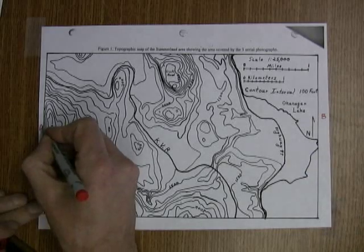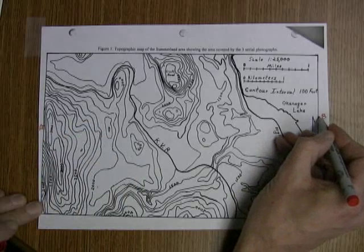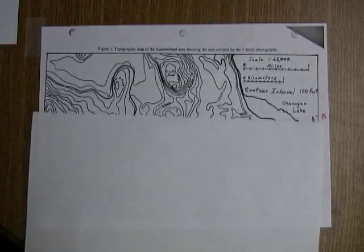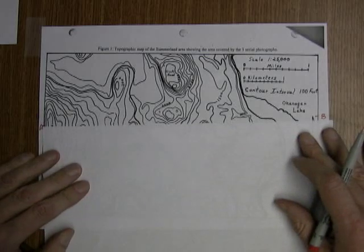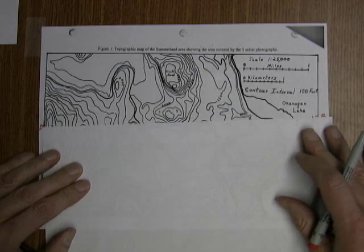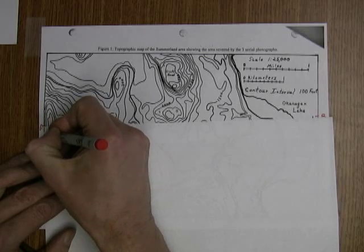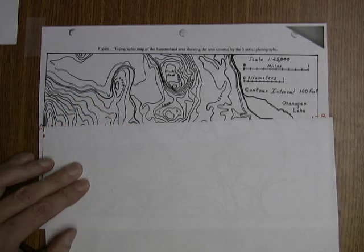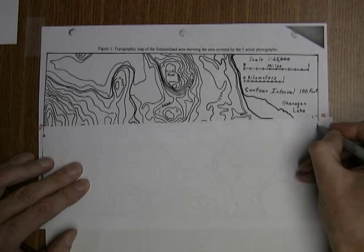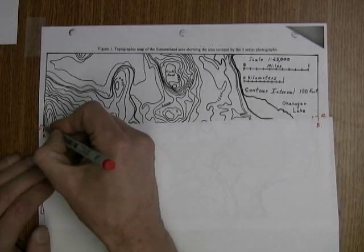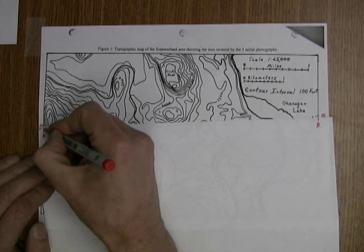Now in order to draw that profile what we need to do is to take a piece of scrap paper. We put the scrap paper from here to there. We mark on here A and B and every time one of these contour lines crosses this piece of paper we'll put a little tick.